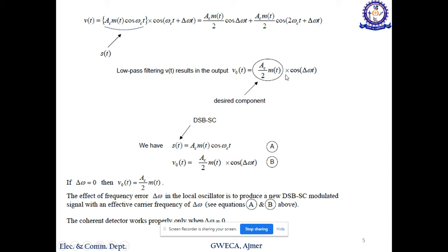This is the only desired part. The desired component is this. So if the frequency error is zero, then cos(0) is 1, and Vo = (Ac/2)m(t), which is our desired output. So the effect of frequency error in the local oscillator is to produce a new DSB-SC modulated signal with an effective carrier frequency of Δω. The coherent detector works properly only if the frequency error is zero.